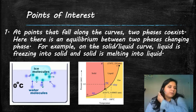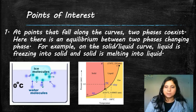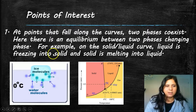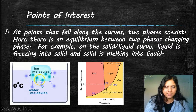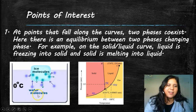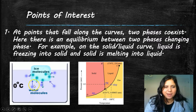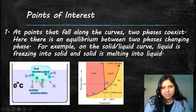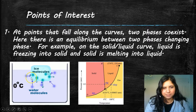Here's an example: which letter represents the gas phase? Hopefully you said Z. Z is the gas phase where pressure is low and temperatures are high.